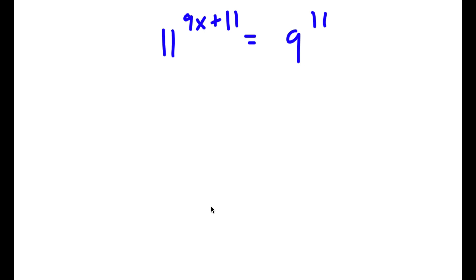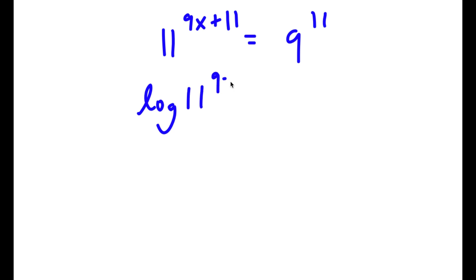In this problem, I have 11 to the power of 9x plus 11 is equal to 9 to the power of 11. To solve this problem, I'm going to first start by taking the log on both sides. So I have log of 11 to the power of 9x plus 11 is equal to log of 9 to the power of 11.